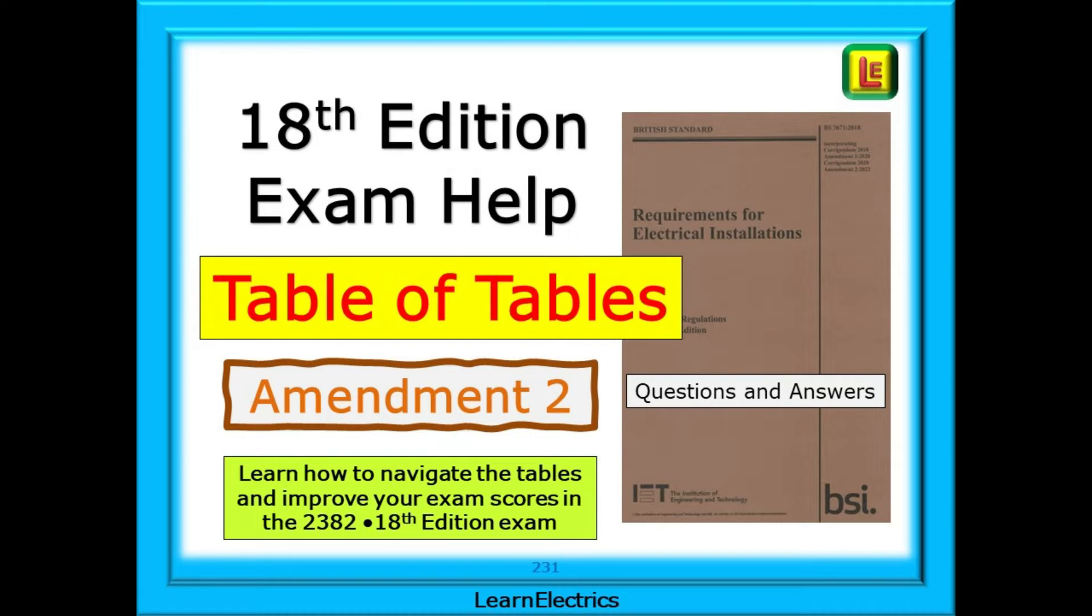This video from LearnElectrics is a continuation of our exam help series for electrical exams and assessments. The video is directed towards the 2382 18th edition exam and all references are made to the Brown Wiring Regulations book with the long title BS 7671 2018 Amendment 2 2022. This is the book that you will need to work from for the 18th edition exam.